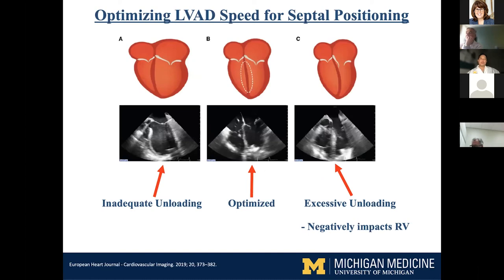When adjusting pump speeds, it's important in the OR and subsequently to look at septal positioning. There are multiple goals when adjusting pump speed, but one important goal is to make sure the LV is unloaded — make sure the septum is not bowing out toward the RV, but more centered — providing adequate support of the LV without tugging on the septum, which can hurt right heart function when the septum bows out to the left. You really cannot increase LVAD speed infinitely — it's a delicate compromise.